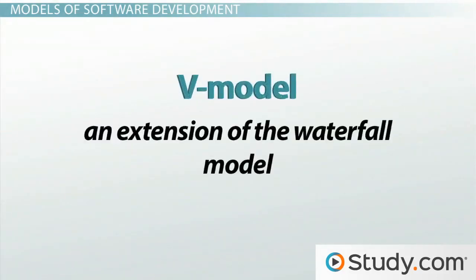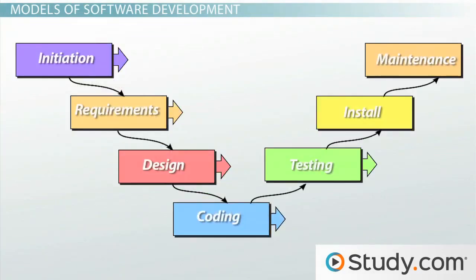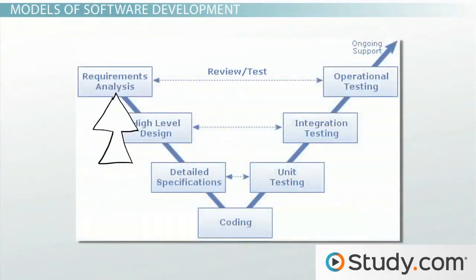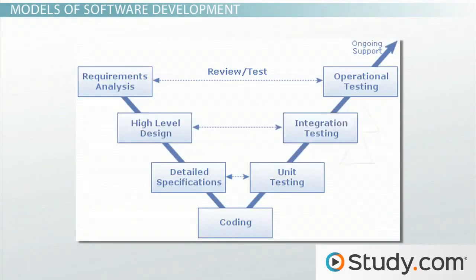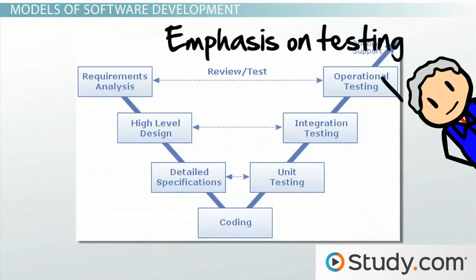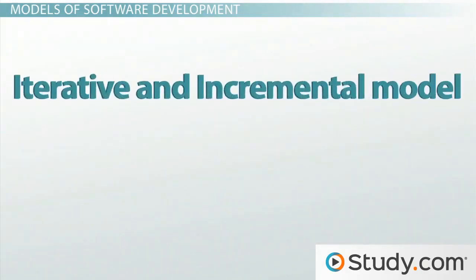The V model is an extension of the waterfall model. Instead of moving down in a linear way, the process steps go upwards after the coding phase to form a V shape. This shape demonstrates the relationship between each early phase of development and the associated testing phase. In this approach, testing procedures are developed early in the lifecycle, even before any coding is done. Testing holds a much greater emphasis here compared to the waterfall model.